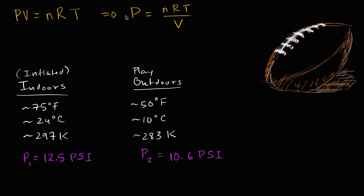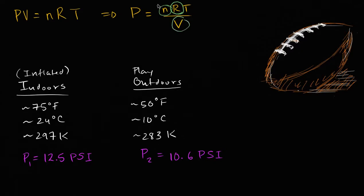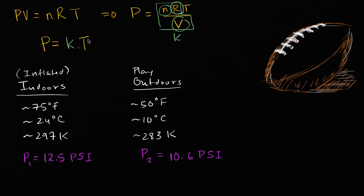Assuming no foul play means no air is let in or out, so the number of molecules doesn't change. The ideal gas constant obviously doesn't change. The volume — the football is made of leather, it's relatively rigid — we'll say its volume stayed constant. Calling all of these constant terms K, we simplify to: P equals K times T. Any percent change in temperature should produce the same percent change in pressure.